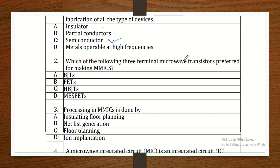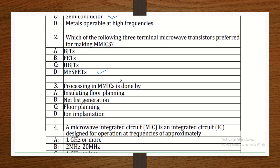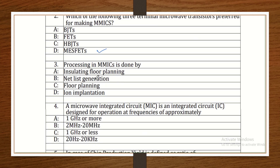Which of the following three-terminal microwave devices are preferred? Options: MOSFET, PJT, FET, HBJT. When you go deeper, you need to know the requirements for this. MIC processing is done by which methods? Options: insulating, floor planning, net-lace floor planning, ion implantation. Ion implantation is the technique by which MIC fabrication is operated.